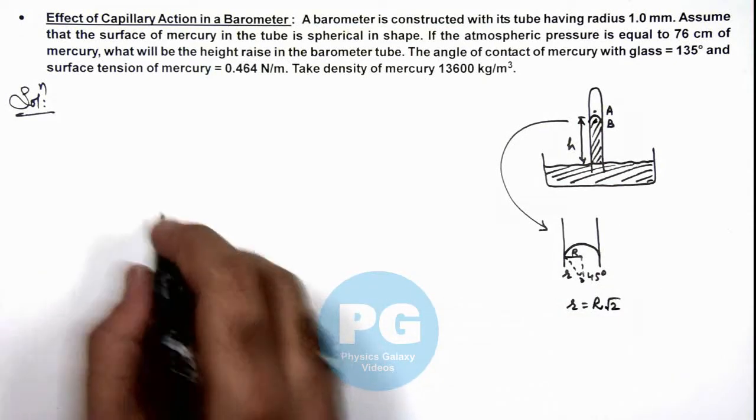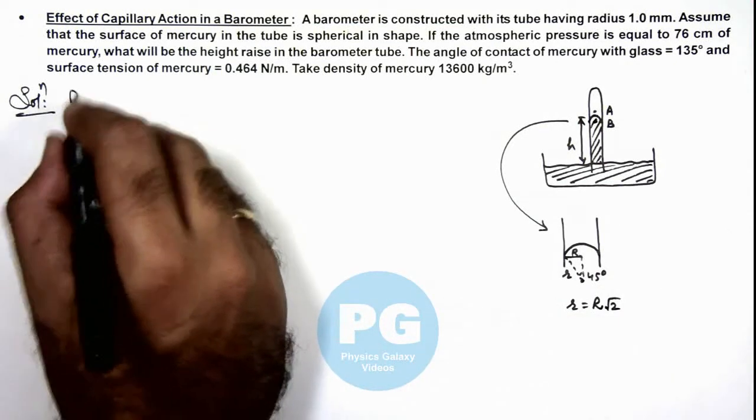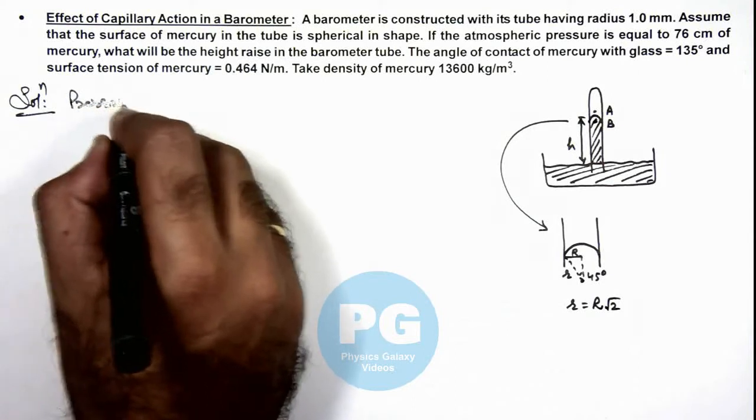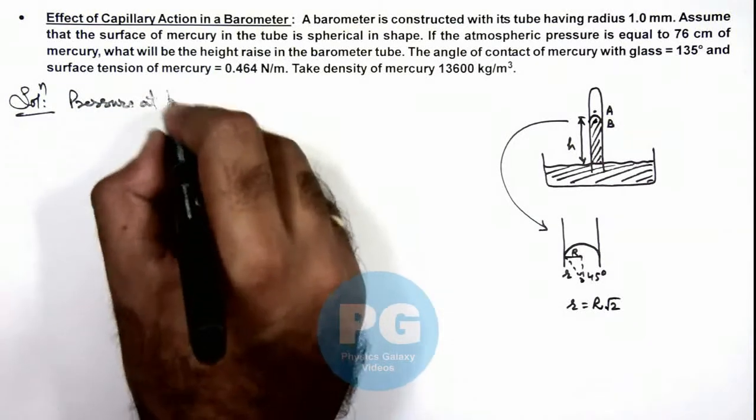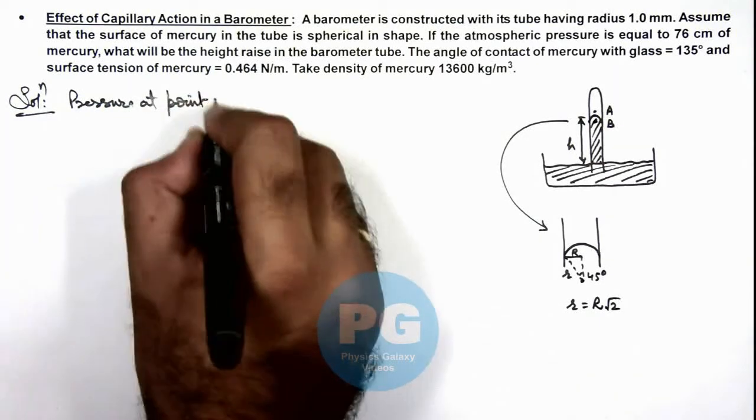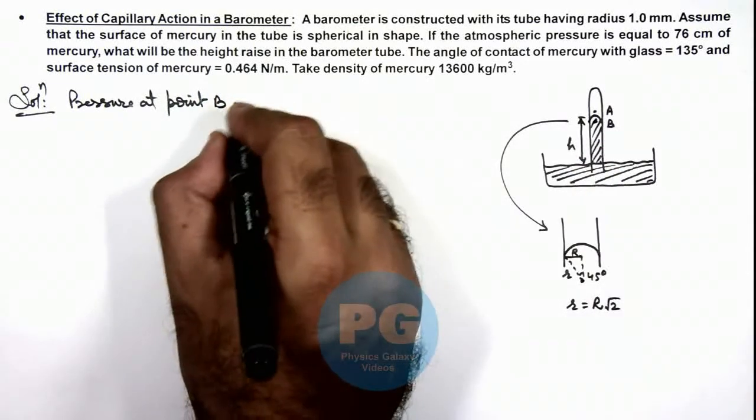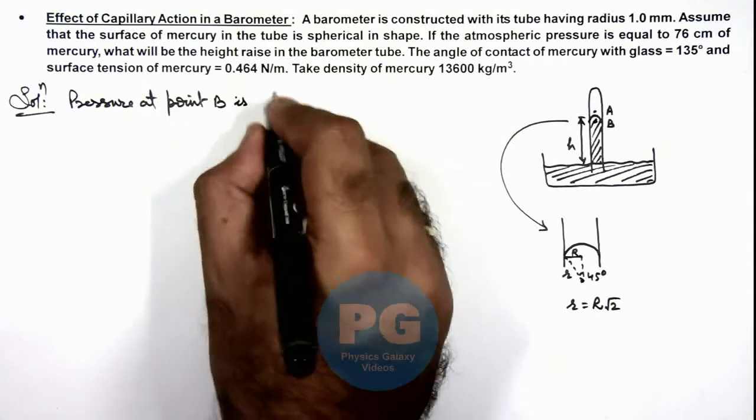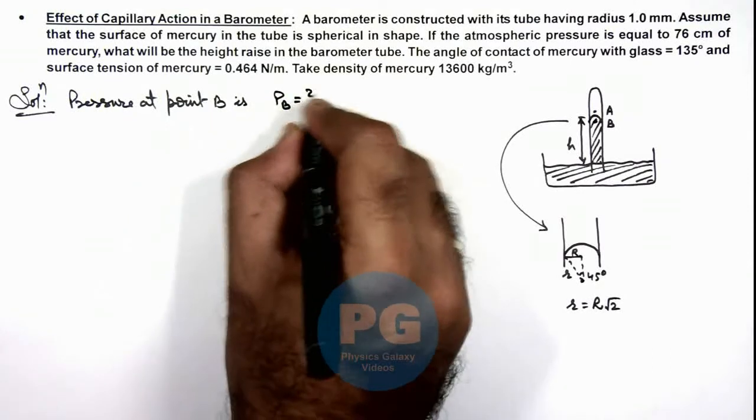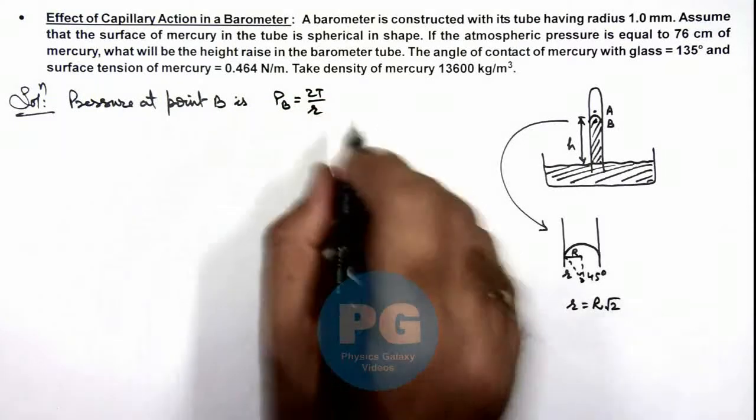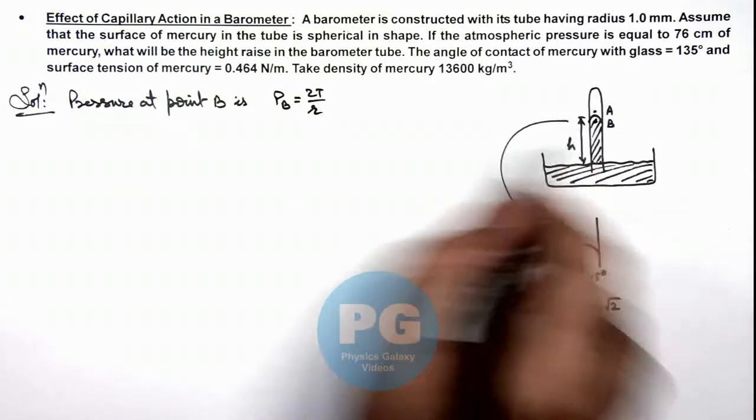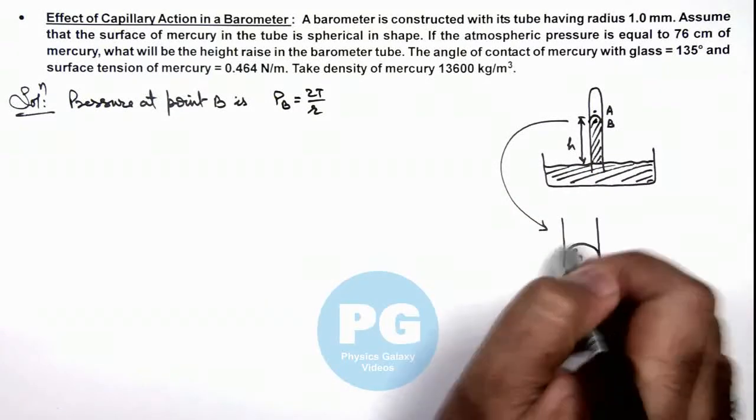Now in this situation, we can write pressure at point B, which is just below the mercury meniscus, can be given as PB equals 2T by r, if T is the surface tension of mercury and r is the radius of curvature.